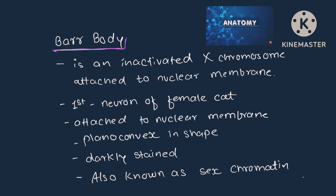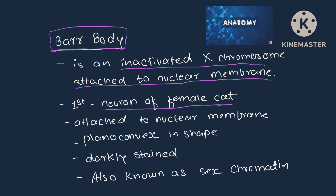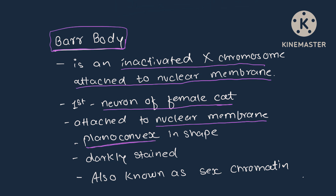Bar body is an inactivated X chromosome attached to the nuclear membrane. Bar body was first found in the neuron of the female cat. Bar body is plano-convex in shape, is darkly stained, and is also known as sex chromatin.